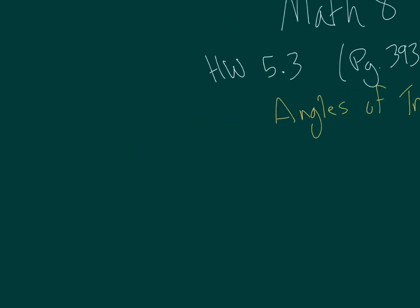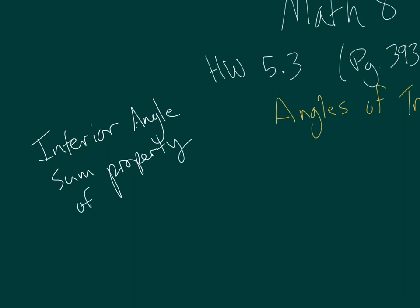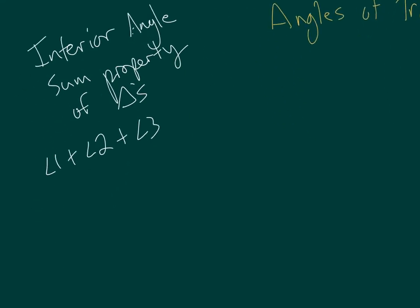Just a quick refresher, what we learned in class is that the interior angle sum property of triangles states that if you have three angles, the measure of angle 1 plus the measure of angle 2 plus the measure of angle 3, that sum is equal to 180 degrees if you're talking about the interior of a triangle.